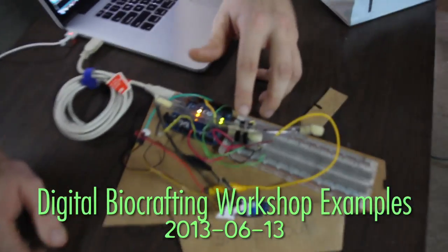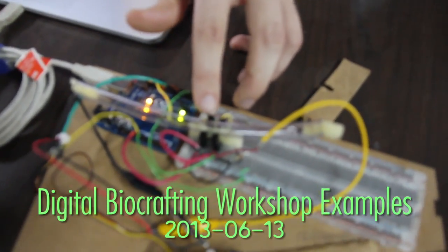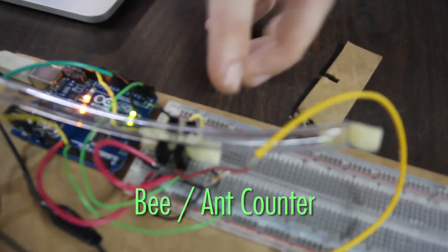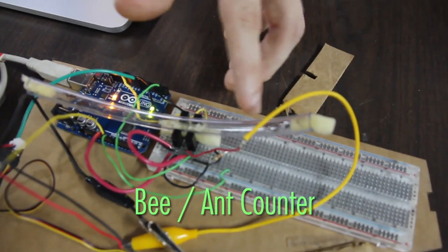First, we have here an Arduino hooked up to two photo emitter detector coupling pairs with some ants inside.